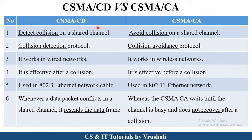Now let's understand the difference between the two. As we discussed, CSMA/CD detects the collision in a shared channel, while CSMA/CA avoids collision in a shared channel. That's why CSMA/CD is called the Collision Detection protocol, and CSMA/CA is called the Collision Avoidance protocol.